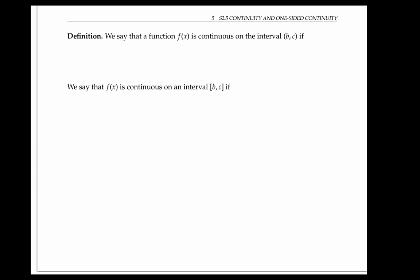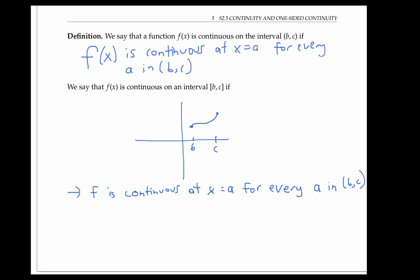We say that a function f of x is continuous on the open interval BC if f of x is continuous at every point in that interval. For f to be continuous on a closed interval BC, we require it to be continuous on every point in the interior of BC, but we just require it to be continuous from the right at B and from the left at C.